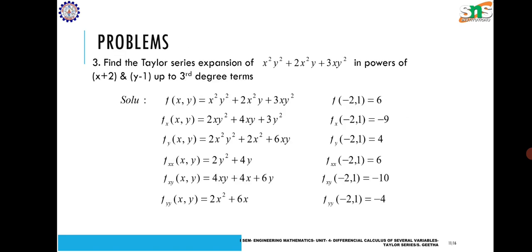In the previous two problems we handled a trigonometric function and a logarithmic function. Now we are finding the Taylor expansion for an algebraic function: f(x, y) = x²y² + 2x²y + 3xy². We are going to expand this function in powers of (x + 2) and (y − 1) up to third degree terms. So the point (a, b) = (−2, 1).